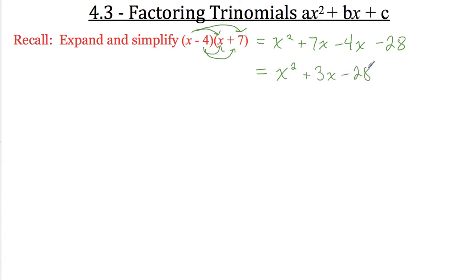Let's examine what we've done with these two. Our original statement was in factored form. If this was a parabola, my a value would be 1, my zeros would be 4 and negative 7. And what we've done by expanding and simplifying is we've created the standard form. What standard form tells us is the y-intercept. Standard form has the y-intercept right here, and the a value is still 1.